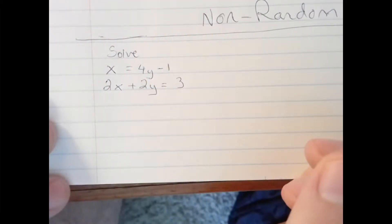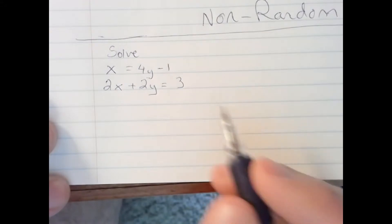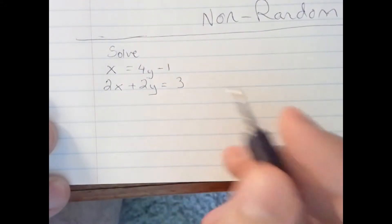Here we're going to do a quick example of solving a system of equations by substitution. We have x equals 4y minus 1, and 2x plus 2y equals 3.